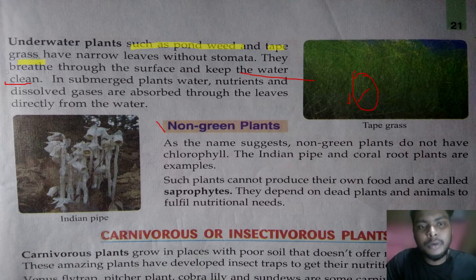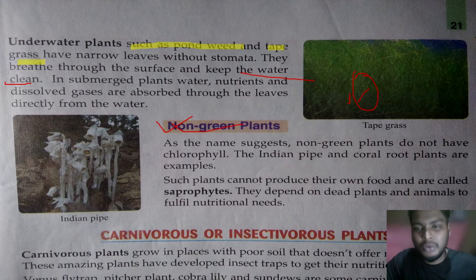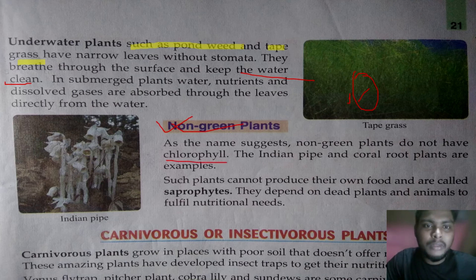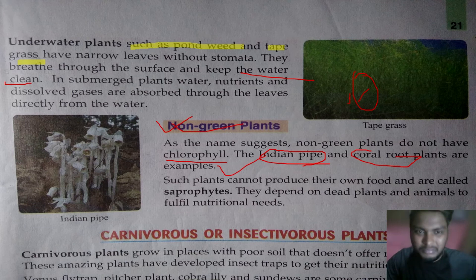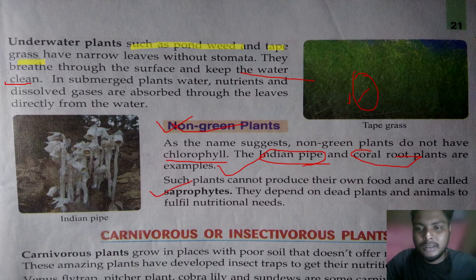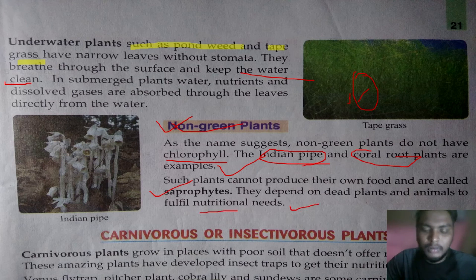Non-green plants, as the name suggests, do not have chlorophyll. Examples include the Indian pipe and coral root plants. These are known as saprophytes — they depend on dead organic matter for their nutrition.